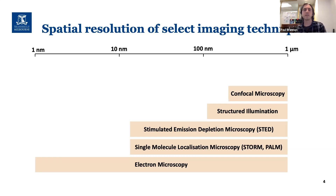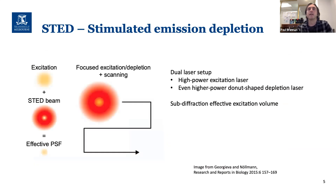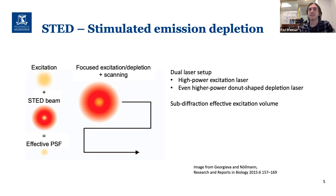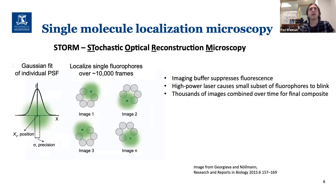STED works by taking a standard confocal spot and overlaying a donut-shaped beam on top of it. That donut beam cuts out excitation from the periphery of the spot, giving you a smaller effective spot. You can shape this donut beam — and that is the technical term — to finer and finer points. Claims of down to two nanometers resolution have been made, which is actually a really amazing technique.